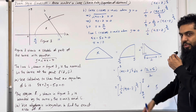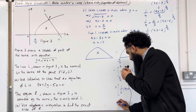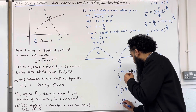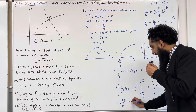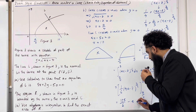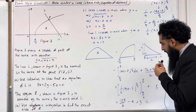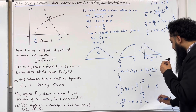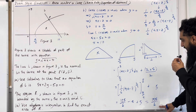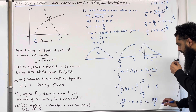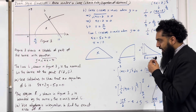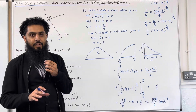Substituting x equals 8 gives 125 over 6. Substituting x equals 7 over 4 gives 0. So the area under the curve is 125 over 6 minus 0, and adding 5 for the triangle gives 125 over 6 plus 5 equals 155 over 6. So the exact area of R is 155 over 6 square units. This completes part B of the exam-style question.